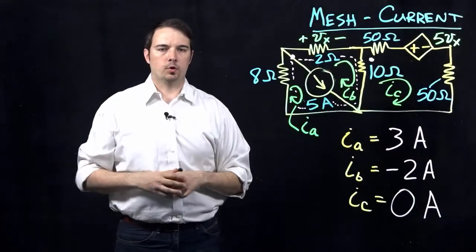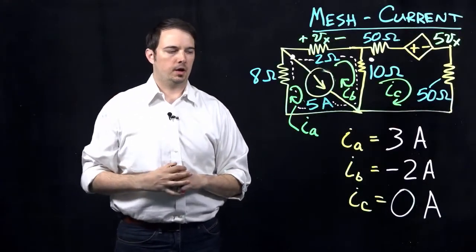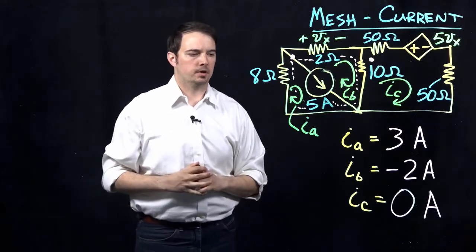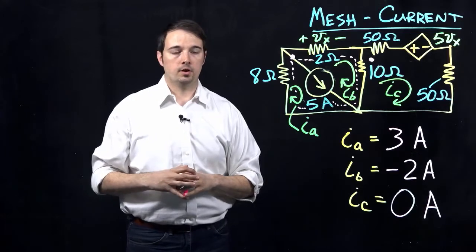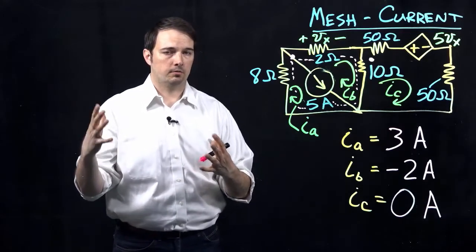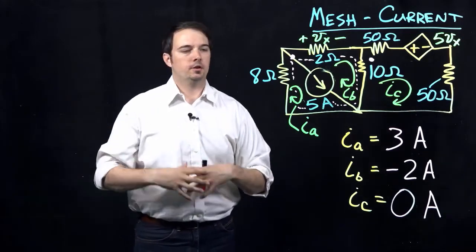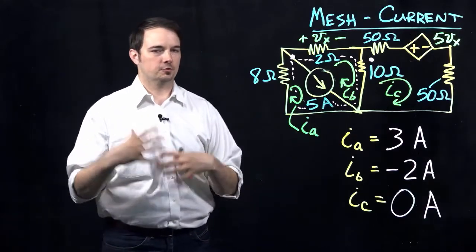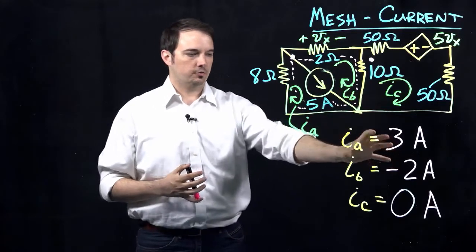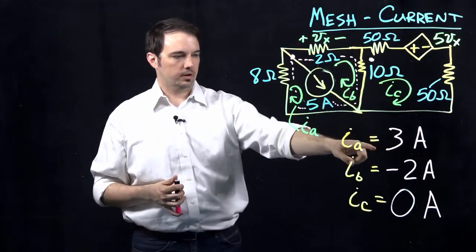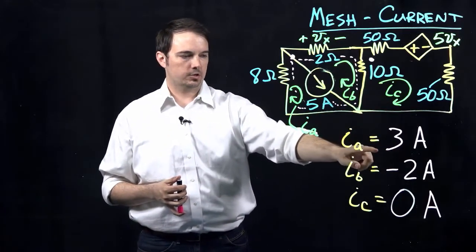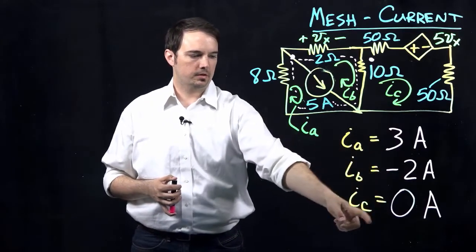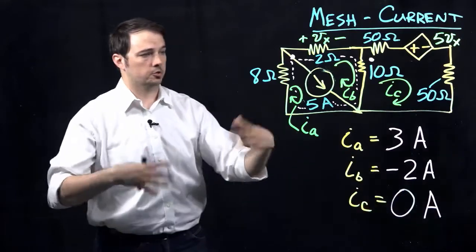If you've taken the time to work through those equations, it should have been relatively straightforward substitution, a little equation manipulation, but otherwise more or less straightforward. This was a problem I gave on an exam where I don't allow calculators. As we look to the final solutions, what you should have gotten was mesh current IA equal to 3 amps, IB was negative 2 amps, and then IC actually ended up being 0 amps.